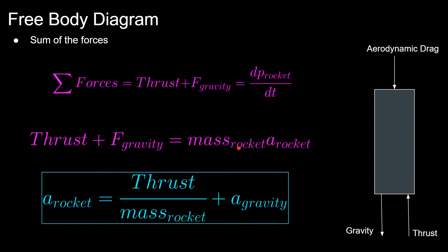From that, we get that the acceleration of the rocket is equal to the rocket's thrust divided by its mass at that specific time, plus the acceleration due to gravity.